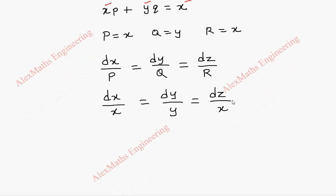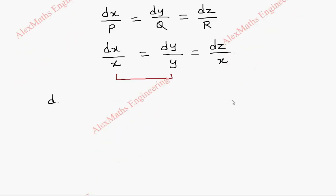Now we are going to group first these two terms and we are going to integrate this. So dx by x equal to dy by y. On integration, we get log x equal to log y.